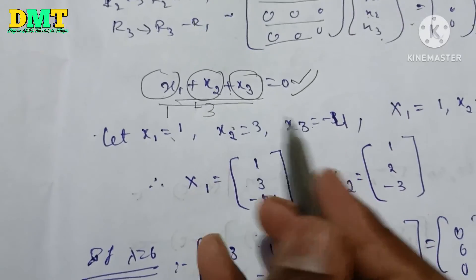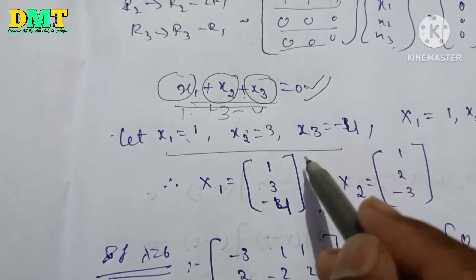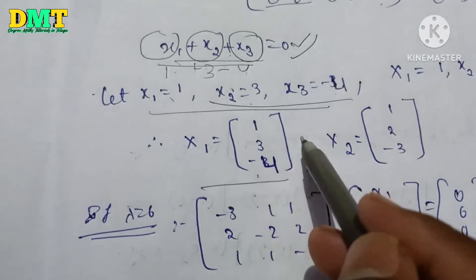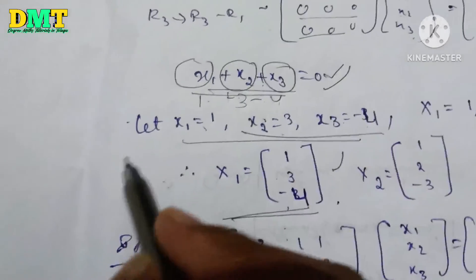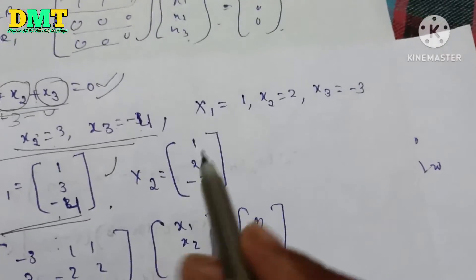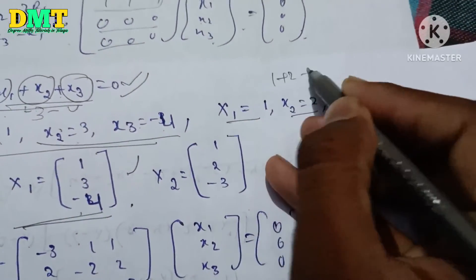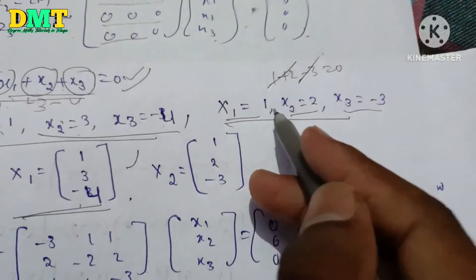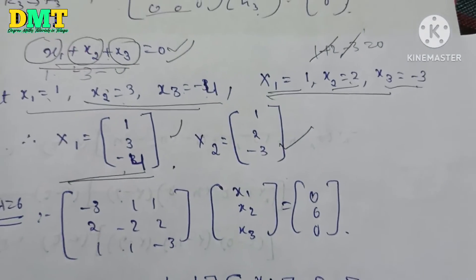Now here we perform row reduction: R2 minus 2*R1, then R3 minus R1. We get x3 minus 4 equal to 0, so x3 is 4. Then x1 equals 1, x2 equals 2, giving eigenvector [1, 2, 1] plus [2, giving the solution vector.